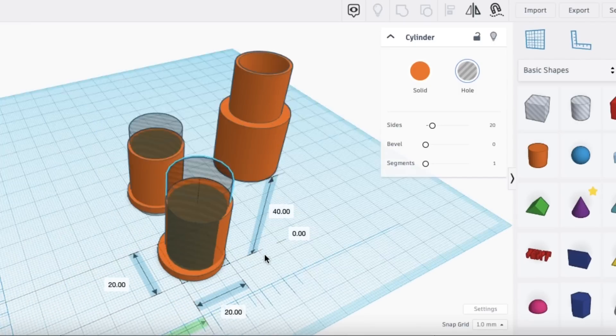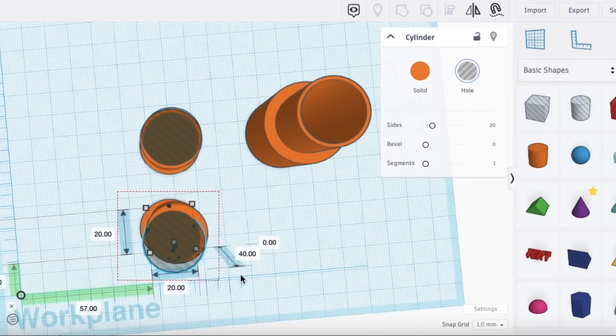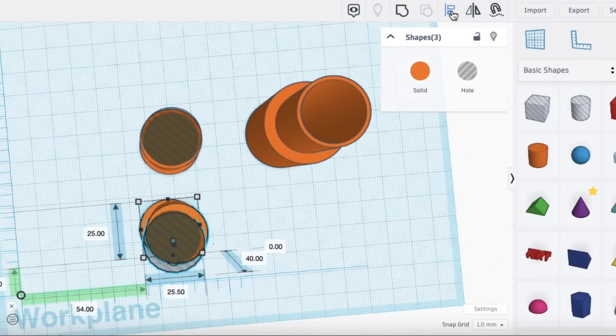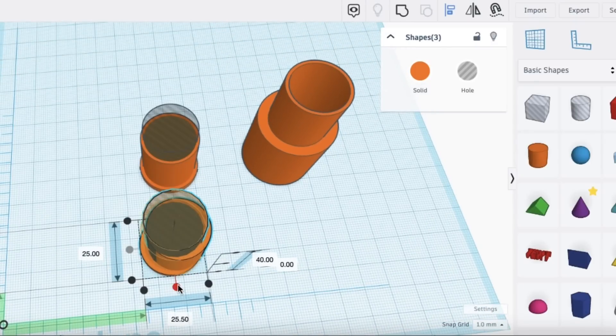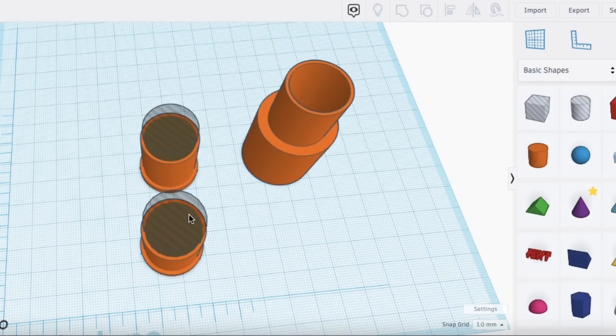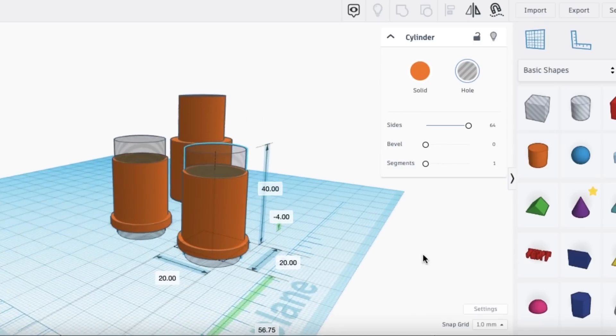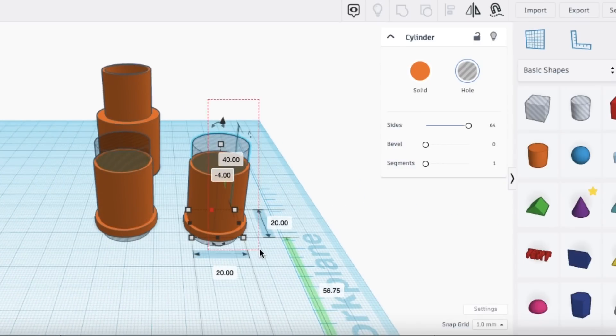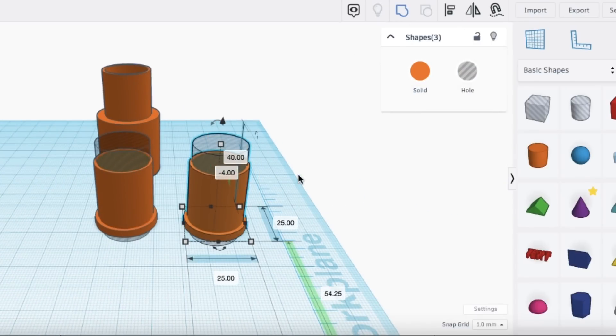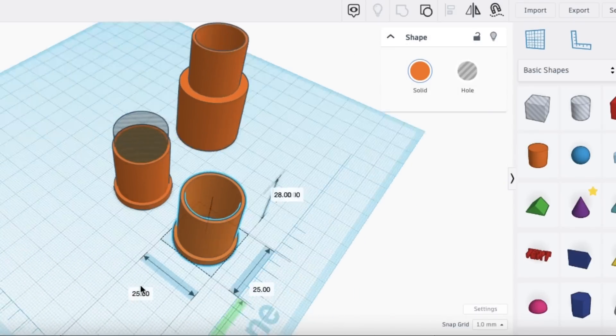Now I'm going to move it over and then align all of these using the centering tool. I'll grab them all, go up to the top, grab the centering tool, click on the X and the Y dots to center these things. Now I can actually group these together and make it into one piece. Just like that I've made the insert.